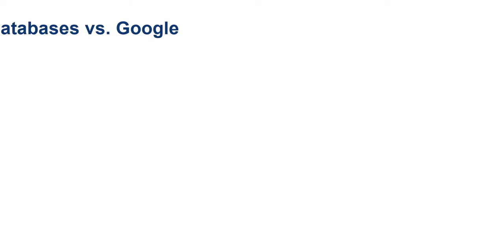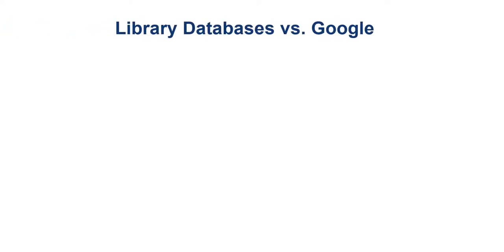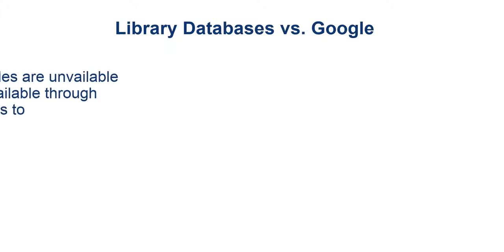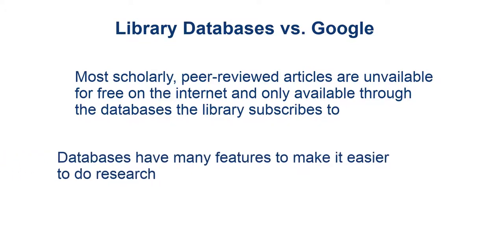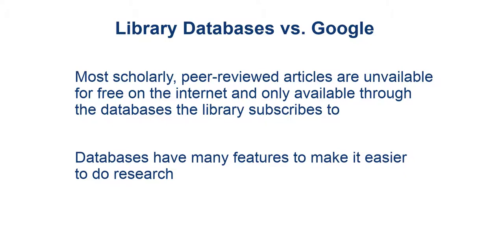Now that you have some idea of what you want to search, it's time to start. When you need to find articles for a research paper, the library databases are the best place to get them. A lot of scholarly peer-reviewed articles — the kind your professors want you to use — are unavailable free on the internet and are only available through the databases the library subscribes to. The library databases also have many features to make it easier to do research and find relevant material.